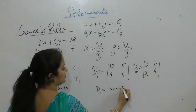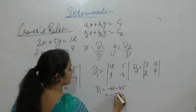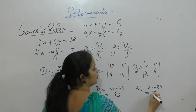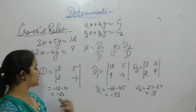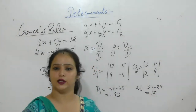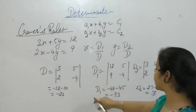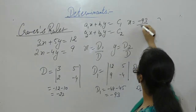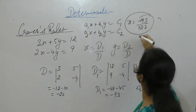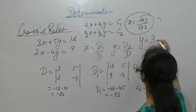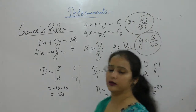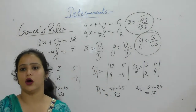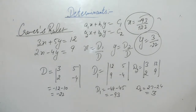D1 is 9 into 5, D2 is 9 into 3 minus 12 into 2, giving 24. So these are the values for D, D1, and D2. Now we can easily find the value of X and Y. X is D1 upon D, that is 93 upon 22. Y is D2 upon D, that is minus 3 upon 22. This is Cramer's rule to solve a non-homogeneous system of linear equations.